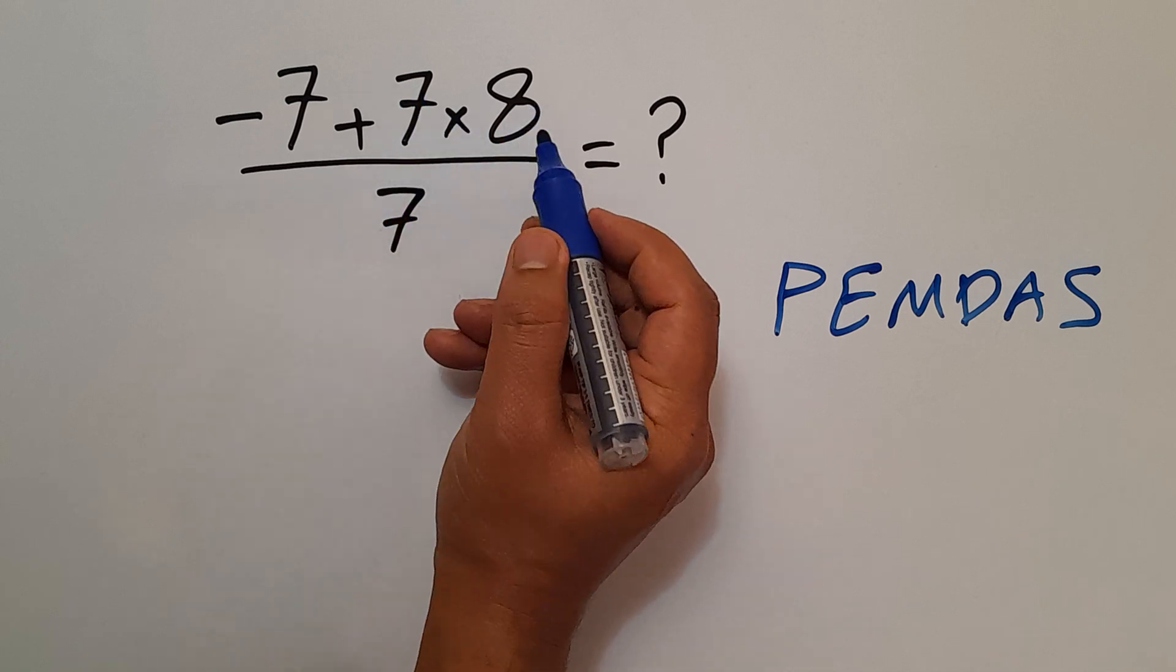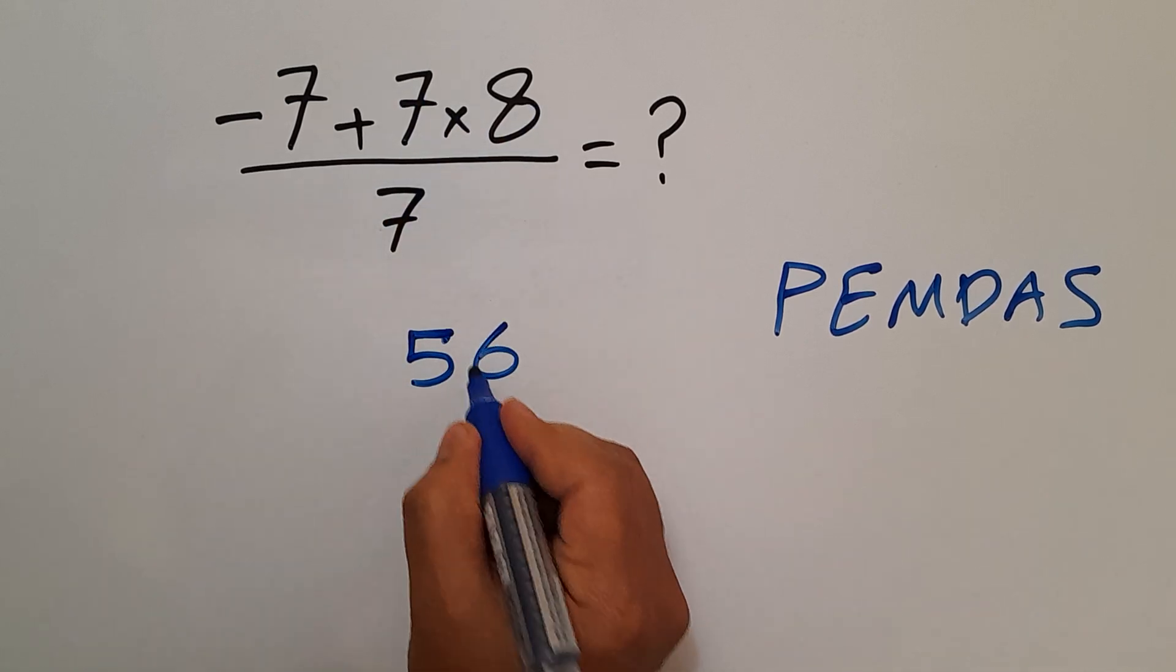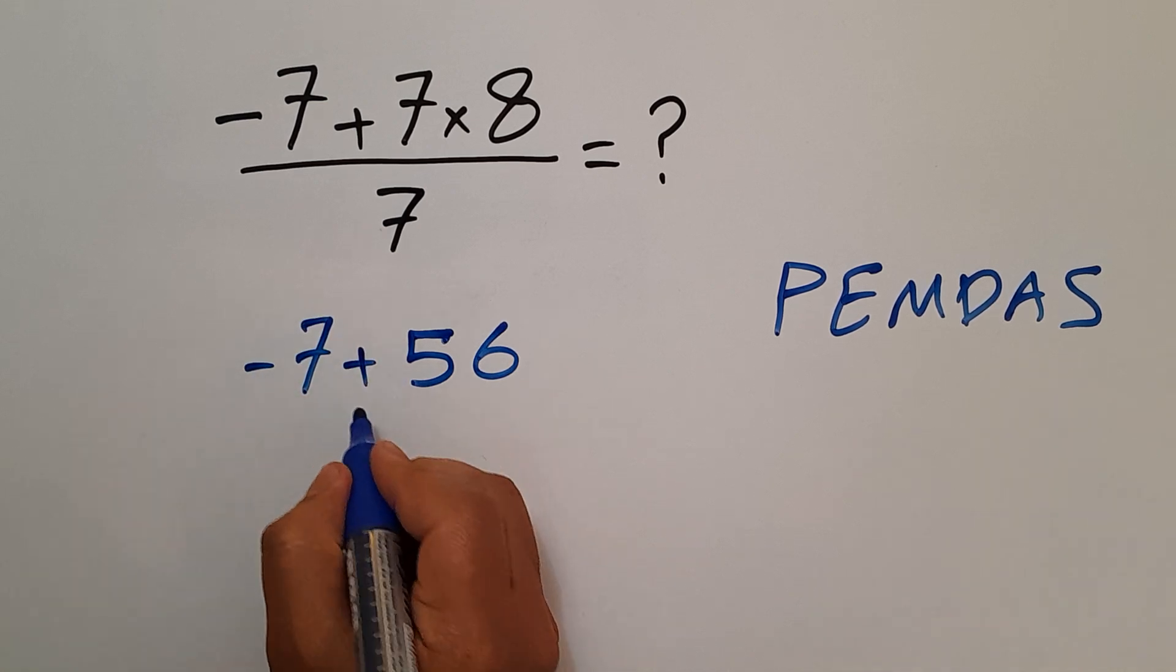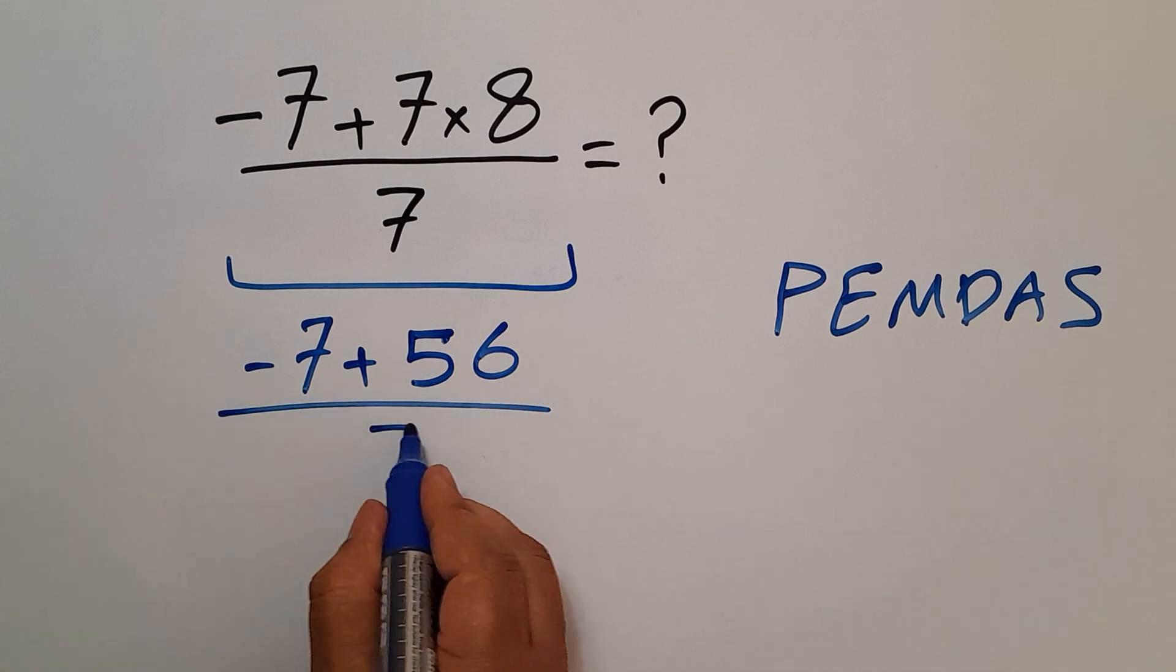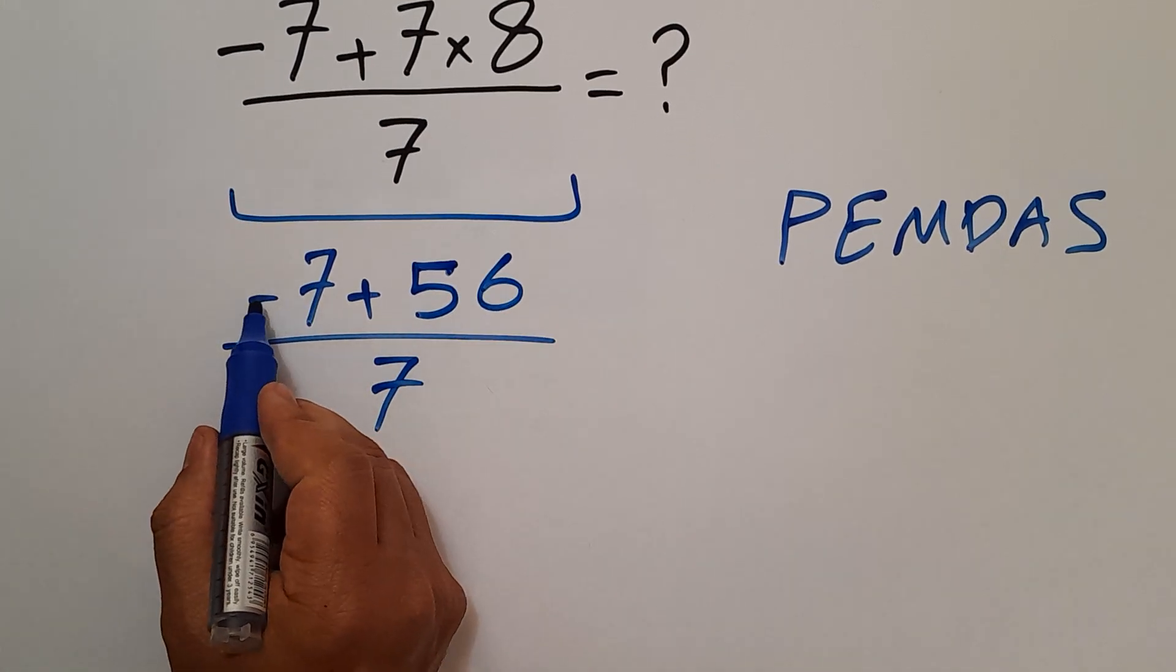So 7 times 8 gives us 56, so negative 7 plus 56 divided by 7.